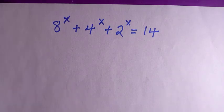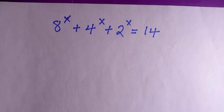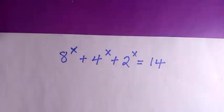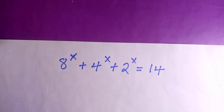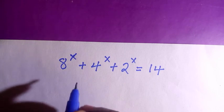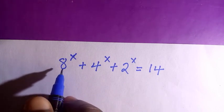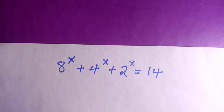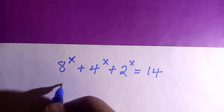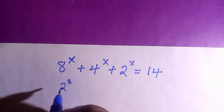Welcome to another video. This problem, which I extracted from the 1961 Olympiad math — let's see how to solve it. The first thing I'm going to do: we have 8 to the power of x plus 4 to the power of x plus 2 to the power of x equals 14.